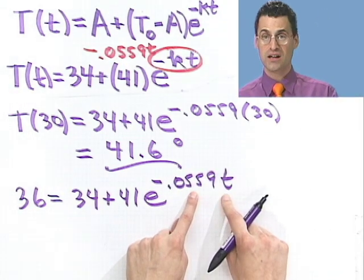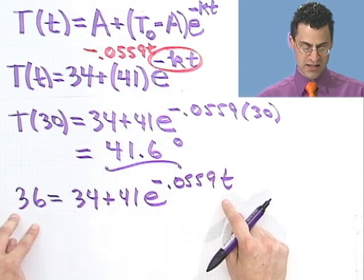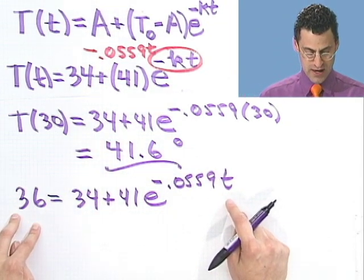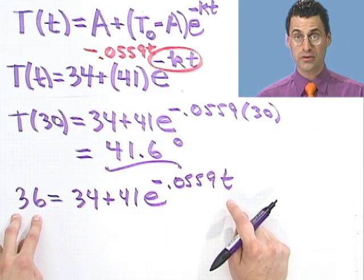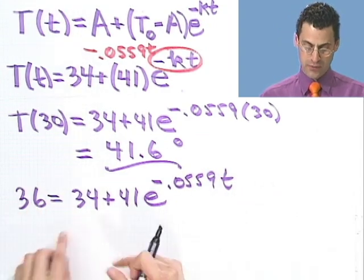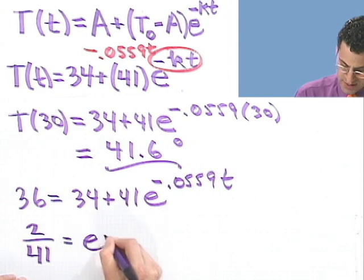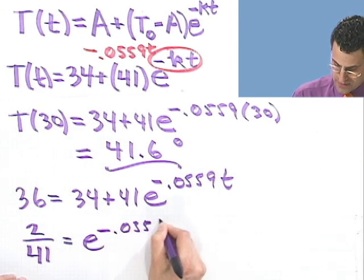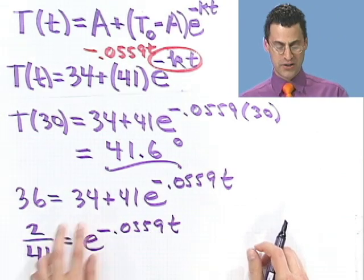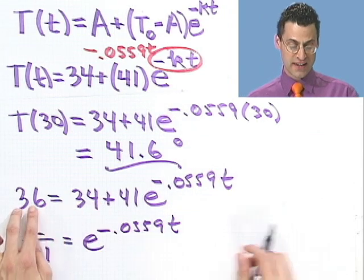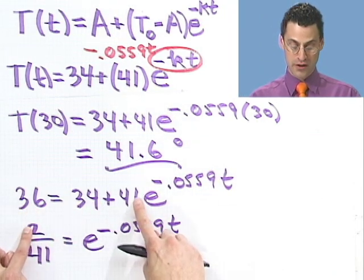So I say 36 equals 34 plus 41 e to the minus .0559 T. And I want to solve that for T. So the first thing I'll do is bring this over to this side, subtract it. And so if I do that, I would just see a 2. And if I divide by the 41, I would see 2 over 41 equals e to the minus .0559 T. So again, what did I do? I just subtracted 34 here. That gave me a 2. But then I also divided by the 41 to get me down here.